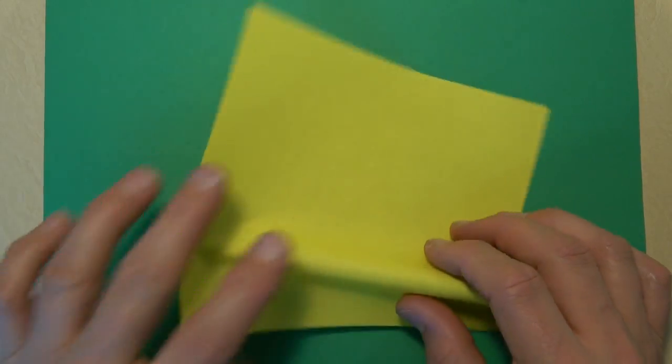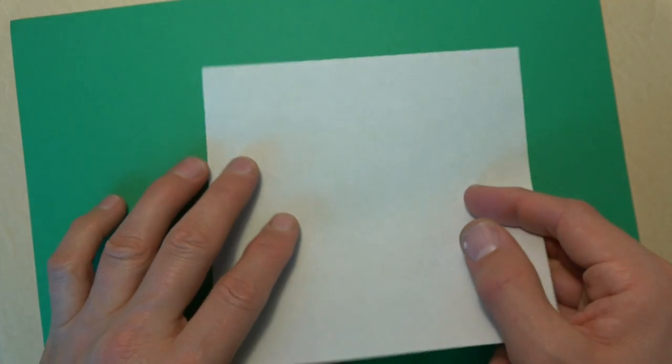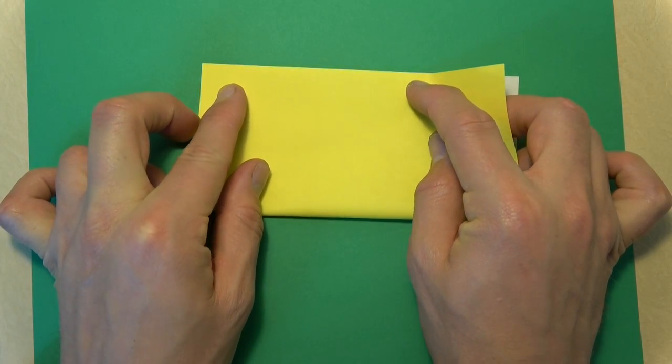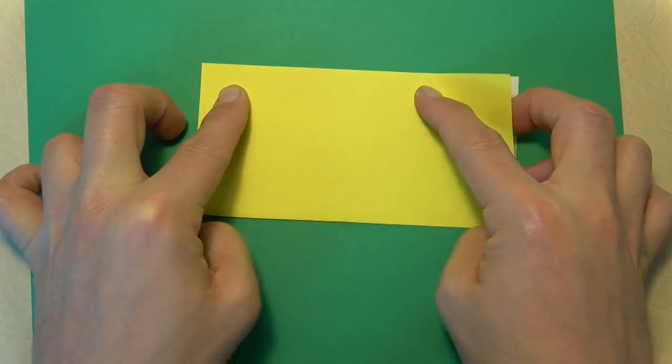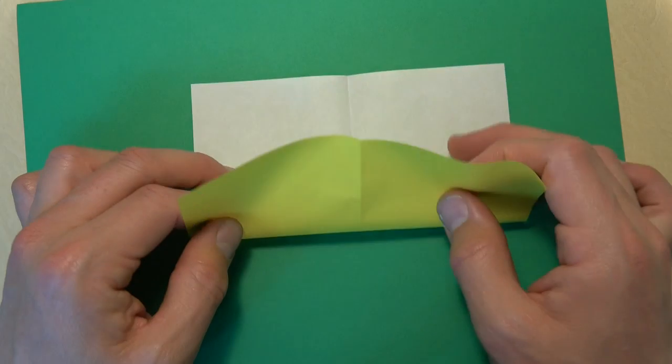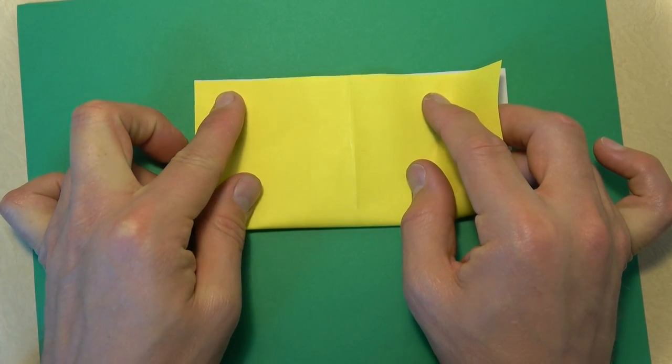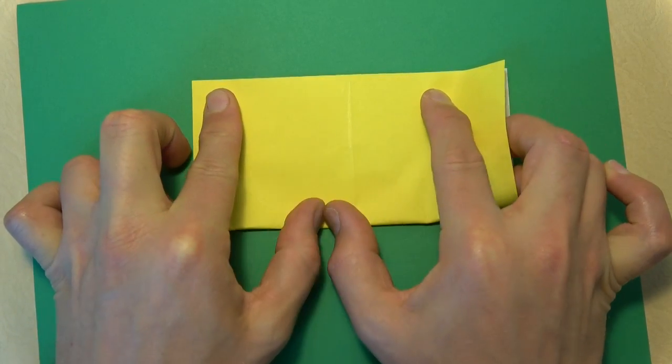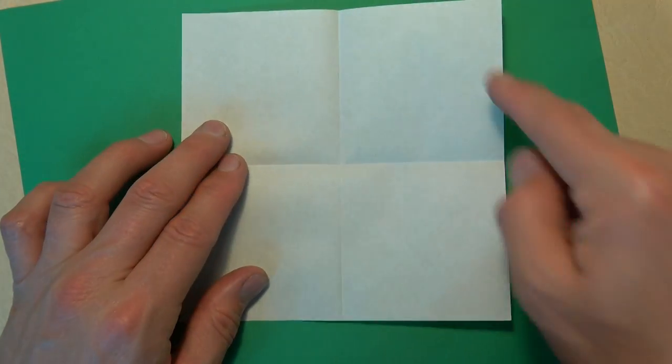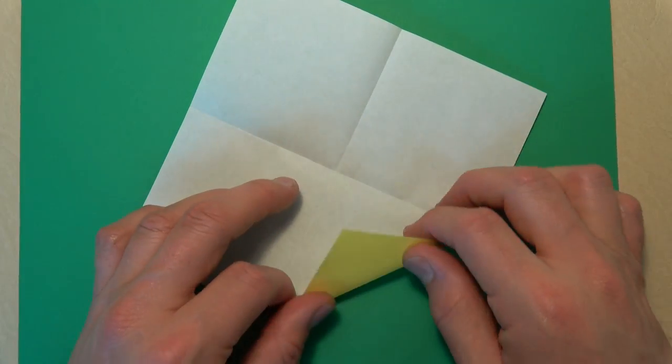So let's start with white side up and let's fold in half. And unfold and rotate. And let's fold in half again. And unfold. And now let's fold all four corners to the middle.